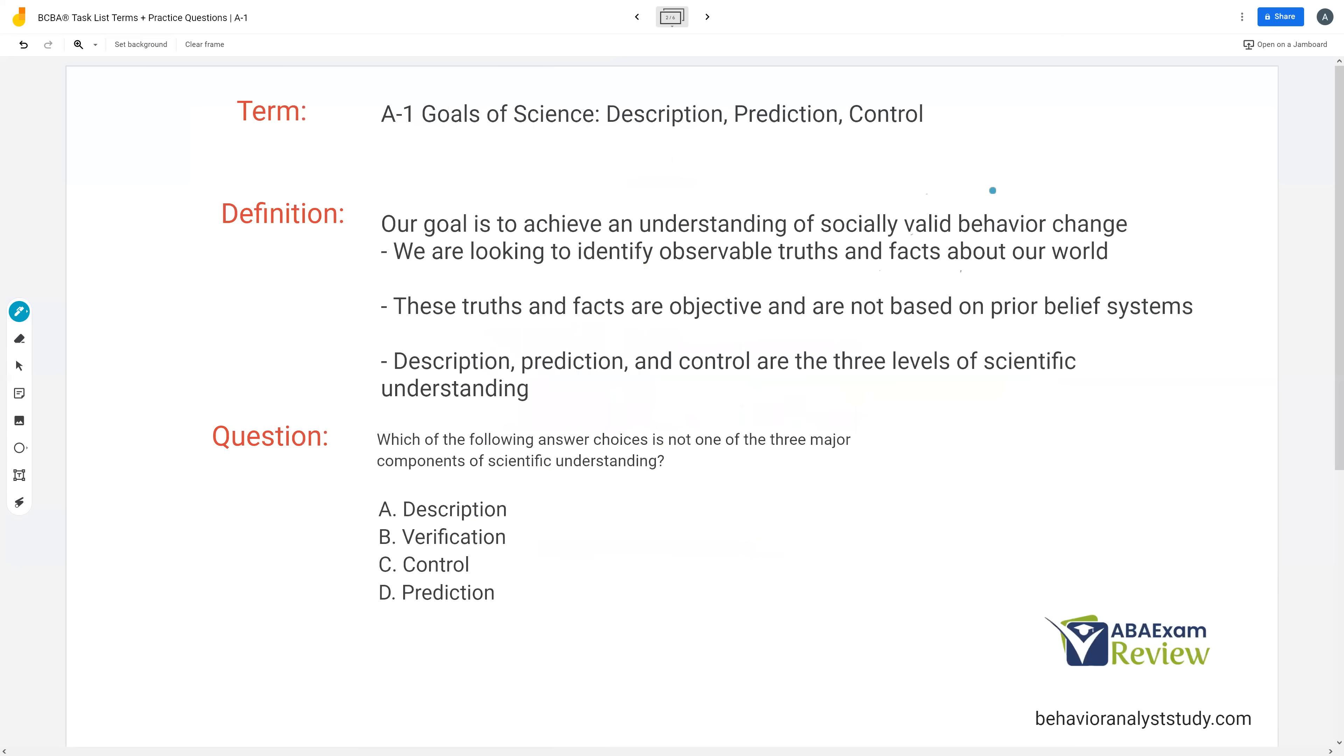So A1, goals of science: description, prediction, control. This is what we're trying to achieve through behavior analysis. What we're trying to understand is socially valid behavior change. And that term socially valid is going to come up over and over again. It's what we're focused on. We don't want to just make behavior change for the sake of behavior change. When we change behavior, it needs to be meaningful in that person's life and the other people around them as well.